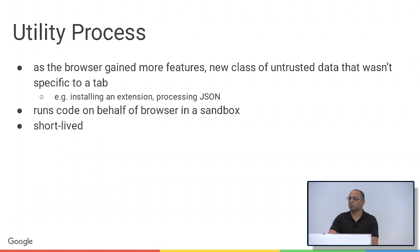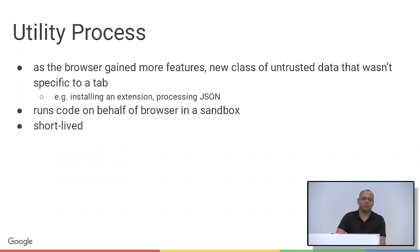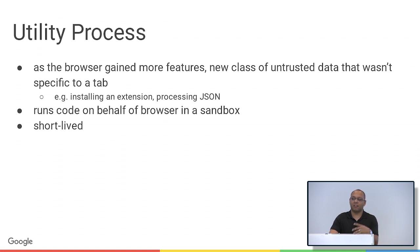The utility process is used for short-lived work. As the browser gained more capabilities — like extensions, or JSON headers coming in from various API calls — we didn't trust our JSON parser. So we wanted to run it in a separate sandboxed process: take the data, perform some operation on it, return the response, then kill the process.